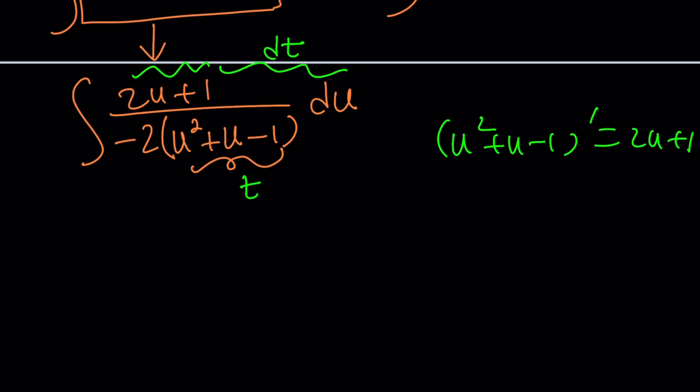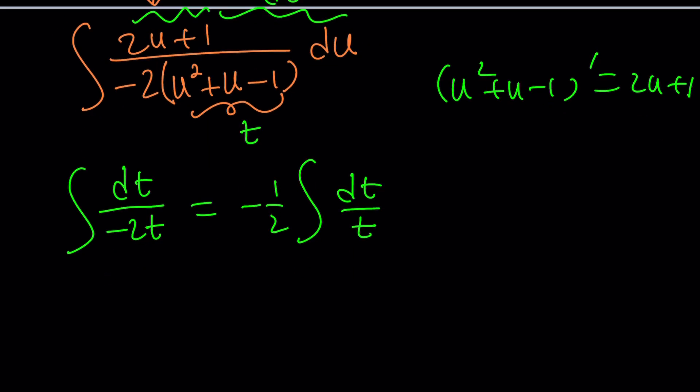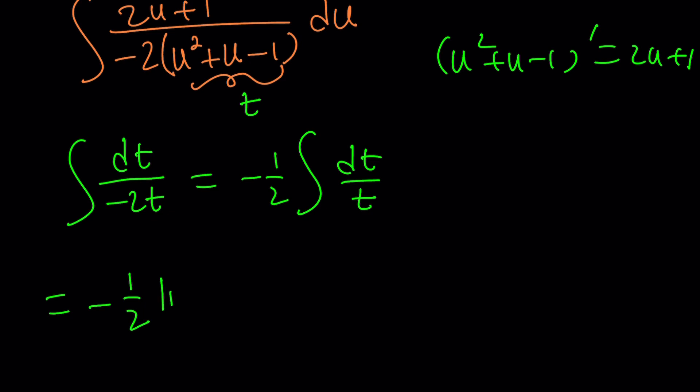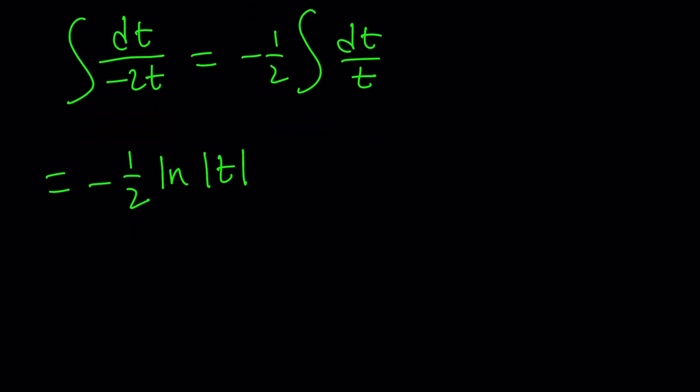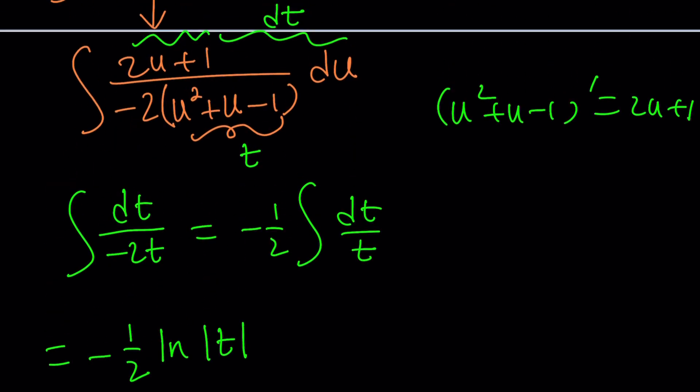So we basically have dt over negative 2t. 2t or not 2t. If you're a tutor, you have 2t's, right? So now we can go ahead and write this as negative 1 half, the integral of dt over t, which is ln, by the way. So this is going to be negative 1 half ln, absolute value of t, plus a constant. But don't worry about the constant yet, because we're going to add that on the right-hand side, which is on the x side, okay? But what is t, what is u? You have to back-substitute everything. t is u squared plus u minus 1. Awesome.